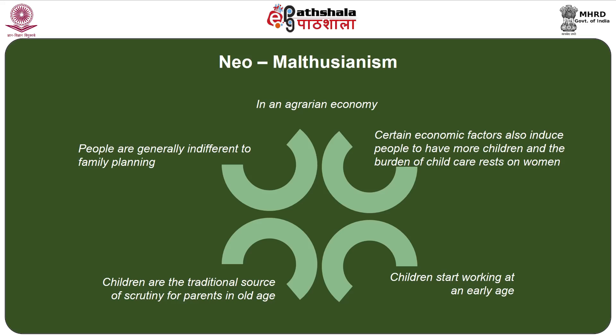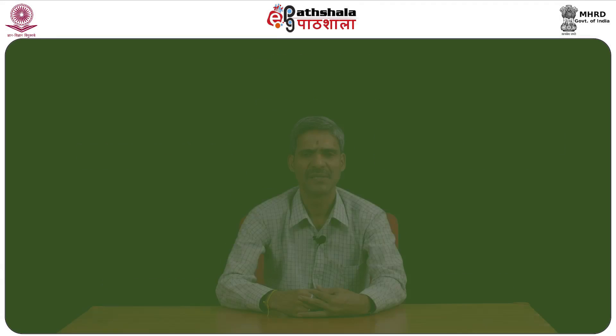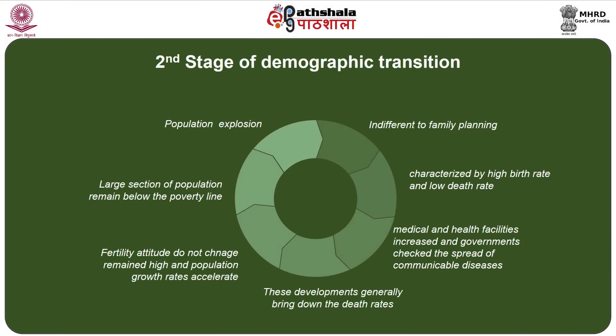Children are also considered the traditional source of security for parents in their old age, and people are generally indifferent to family planning because of these reasons. The second stage of demographic transition is characterized by high birth rate and low death rate, resulting in rapid population growth. With the onset of socioeconomic development, living standards improve, more children attend school, medical and health facilities increase, and governments check the spread of communicable diseases — all leading to reduction in death rates. However, the fertility attitude does not change, so the birth rate remains high and population growth rates accelerate.